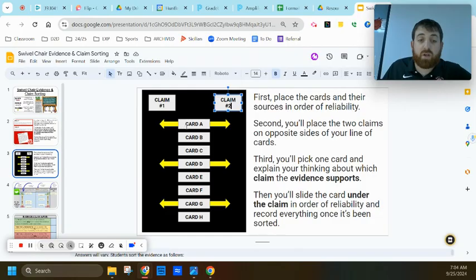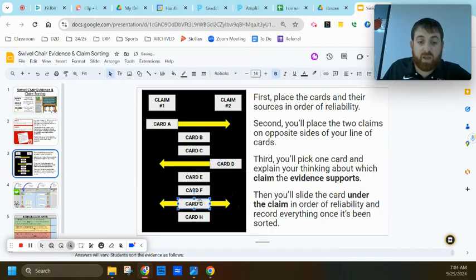The next thing you're going to do is you're going to go card by card, choosing and picking each one and explaining which of the claims it supports based on the evidence it has. For example, letter A we said went with claim one. For card A, we would then slide that underneath the claim that it supports, as you see there, so that you can not only see how reliable it is compared to the others below it, but also now which claim it supports. And you'll do that for all the cards based on the conversations you have and which ones you feel it does and does not support.